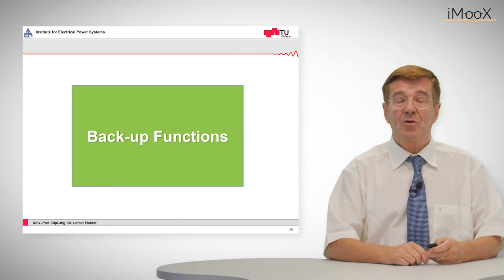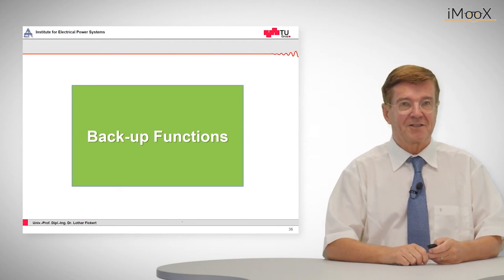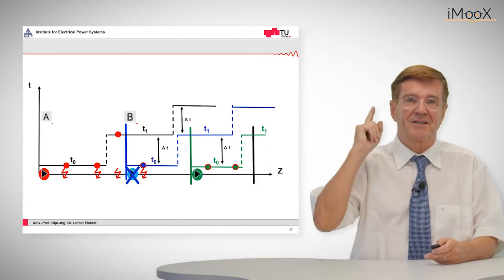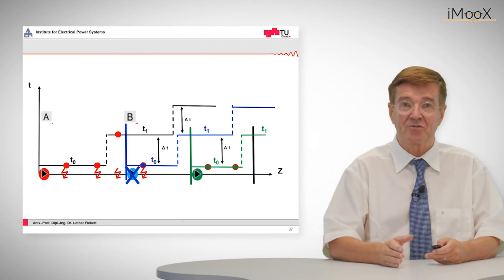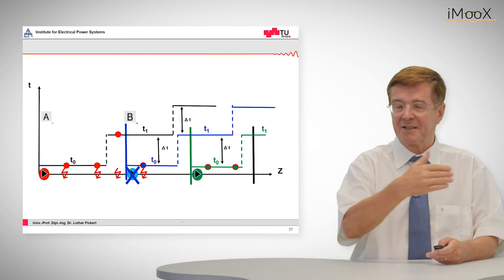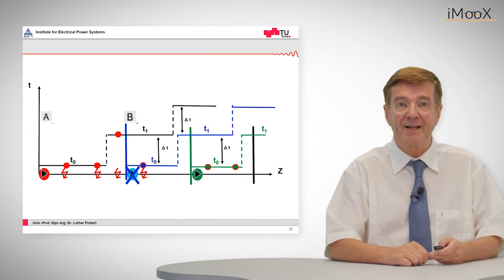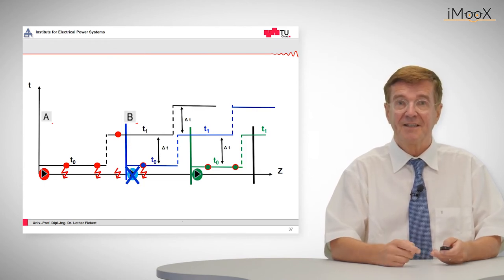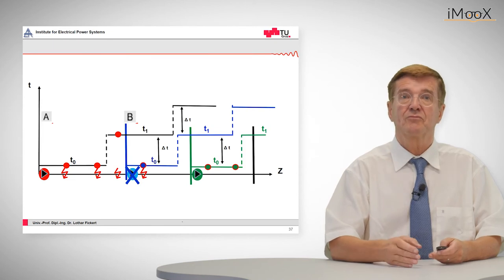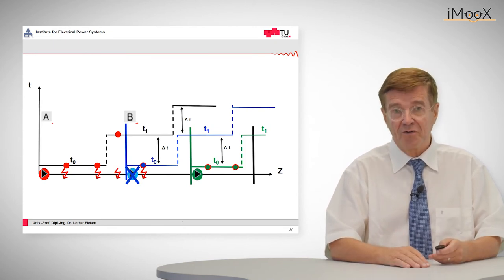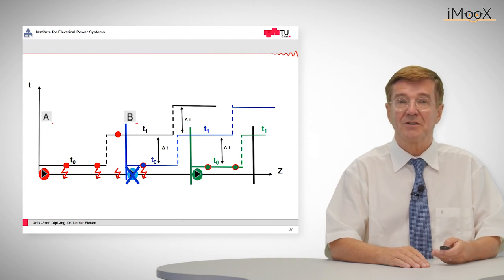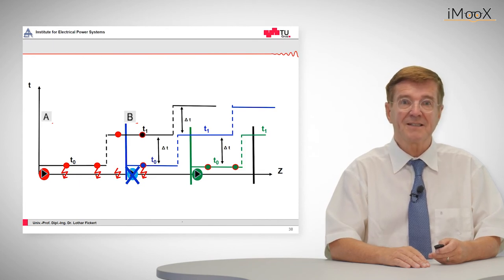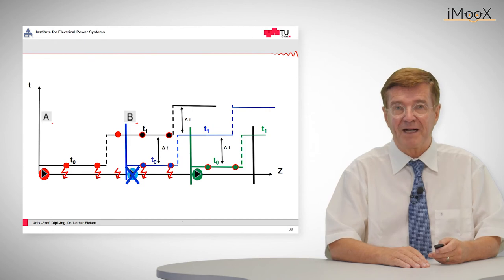This scheme has one more big advantage. We have integrated backup functions. Let's assume that we have a fault shortly behind relay B and that relay B does not pick up. So that means it does not pick up, there is no trip and the fault current is going on until relay A, which sees the fault, will trip in its raised time of 400 milliseconds. The result is we have cleared the fault at a relatively short time, though it is not selective because we trip out the whole bus bar, though only the feeder from B to C should have tripped out. But in any case, this is a backup function.